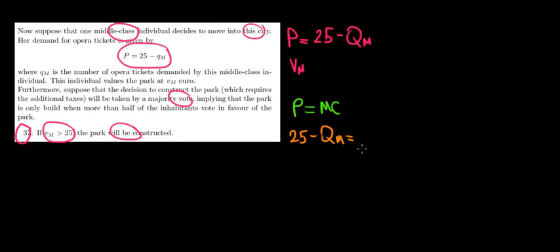The marginal cost would be 20, meaning that the quantity demanded from the middle guy, the middle class guy would be five units. So he would like five tickets.